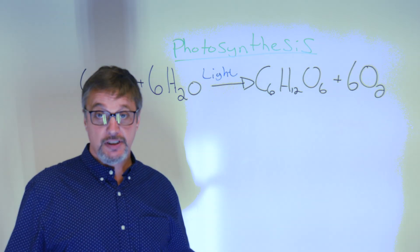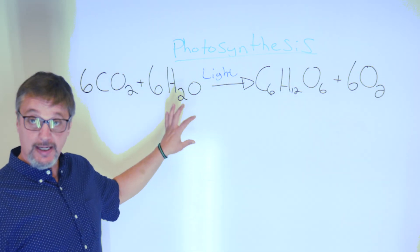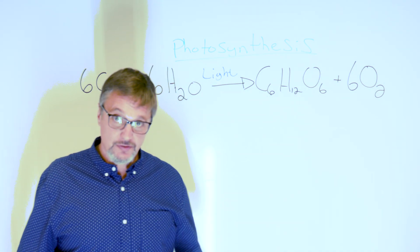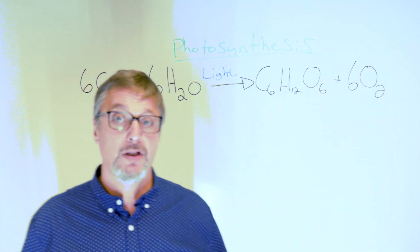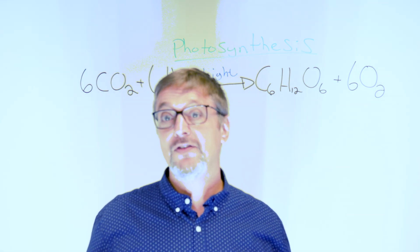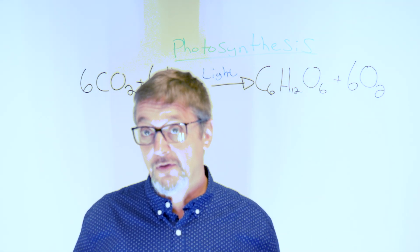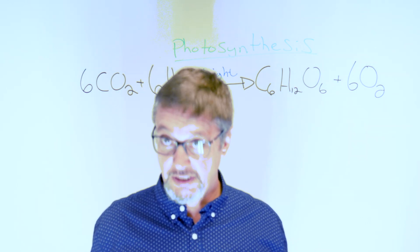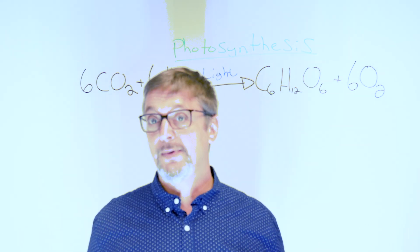If you've ever taken a biology class, you've probably had to memorize the equation for photosynthesis. Photosynthesis is the most important metabolic pathway for plants because it provides them their energy. If you have a lower photosynthetic rate, your plants are just going to grow slower and you'll get lower yields. So all growers should be maximizing their rate of photosynthesis.